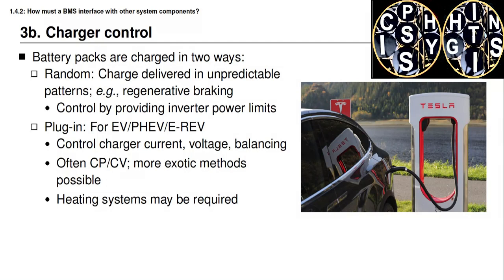The second type of charging is plug-in charging, used in electric vehicles connected to the electric power grid — including pure electric vehicles, plug-in hybrid electric vehicles, and extended range electric vehicles. In these applications, it's possible to communicate directly from the battery pack through the host application to the charger to control the charger's output current or power more directly. The battery management system can then ensure that the charger voltage meets certain requirements and conduct balancing of battery cells while charging is happening. The mode of plug-in charging often follows a constant power, constant voltage mode, though future electric vehicle charging may be optimized to charge the battery pack quickly and safely using somewhat different methods.